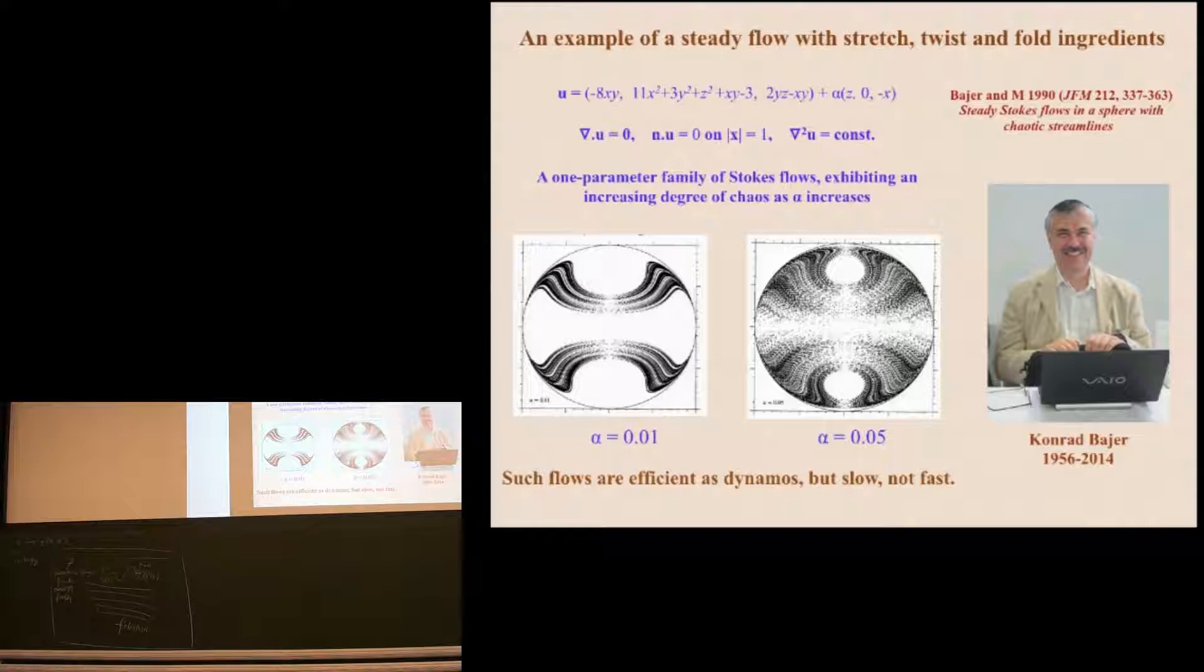And this was the resulting velocity field. Its components in Cartesian coordinates. So this is all quadratic in the Cartesian coordinates. Plus alpha times what is actually a rotation, a rigid body rotation about the y-axis. And it turns out that when alpha is zero, this is an integrable system. When alpha is non-zero, it is non-integrable, and in fact has chaotic streamlines within the sphere.